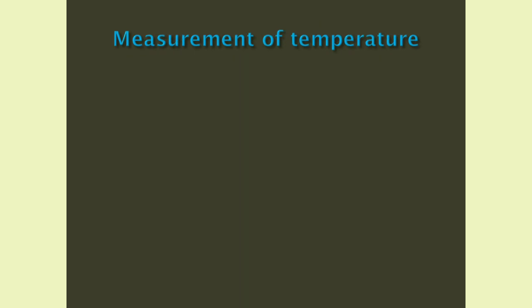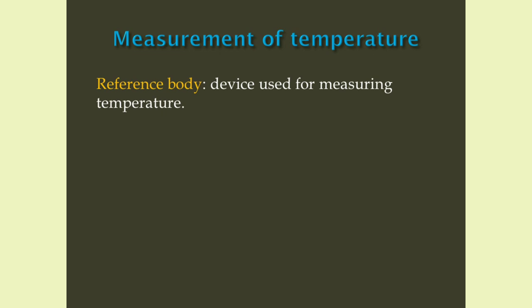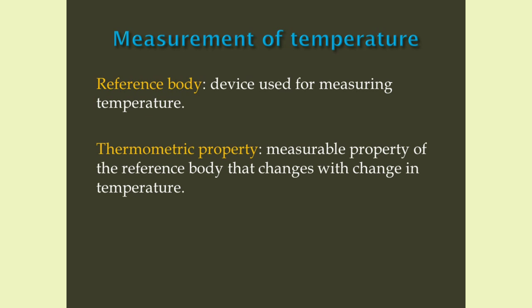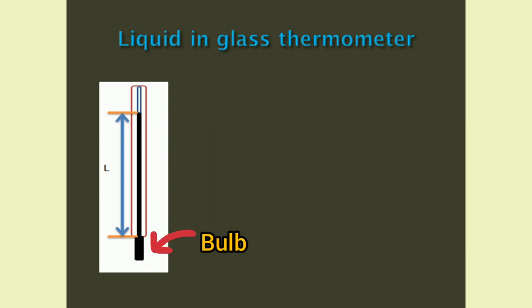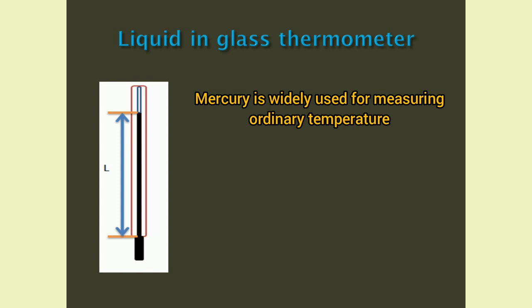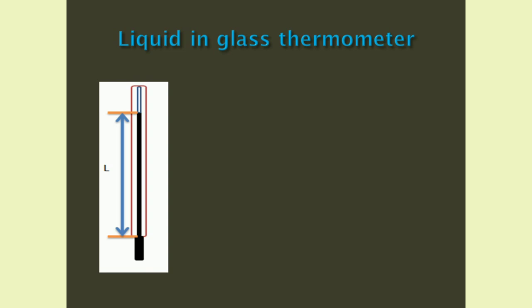Measurement of temperature. In order to measure temperature, we need a reference body — it is the device used for measuring temperature. And this reference body should have some measurable property that changes with change in temperature. This property is called thermometric property. Liquid-in-glass thermometer: it consists of a uniform diameter glass capillary tube connected to a bulb filled with liquid at one end. As temperature increases, the liquid expands and rises in the capillary tube. The height of the liquid column in the capillary tube is calibrated into a temperature scale. Mercury is widely used for measuring ordinary temperature. The thermometric property here is length, since the liquid expands and contracts with the change in temperature.